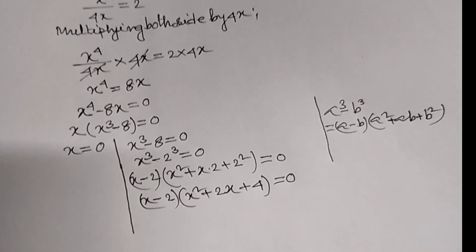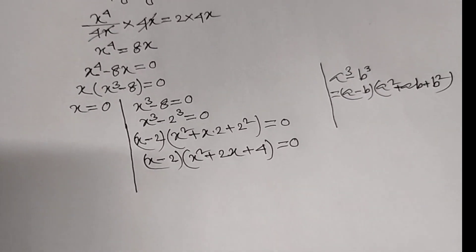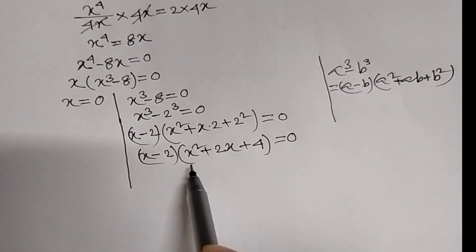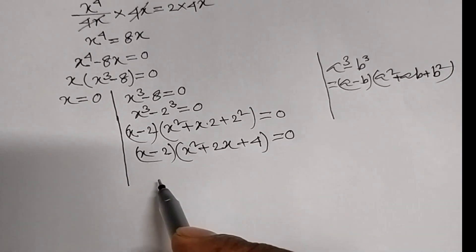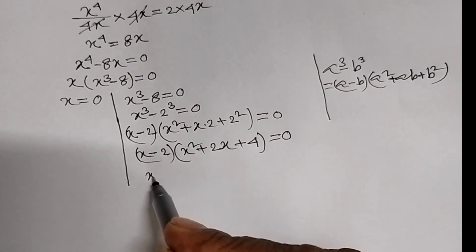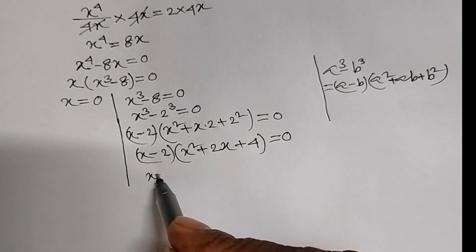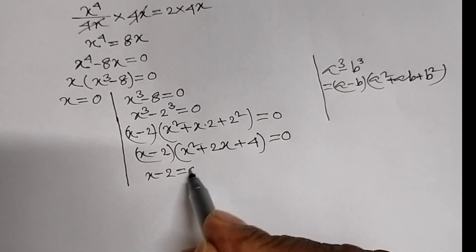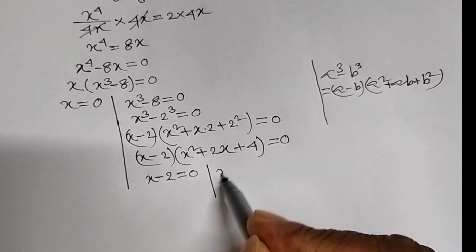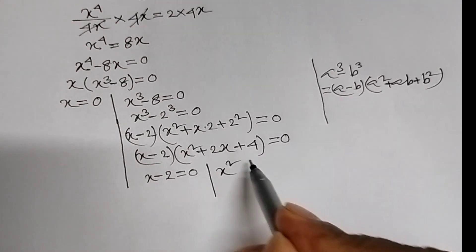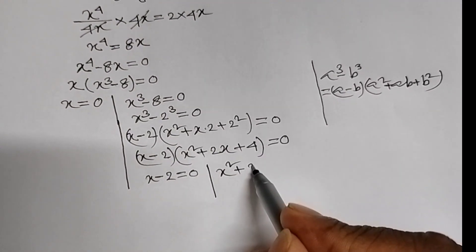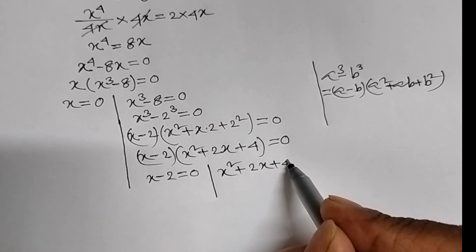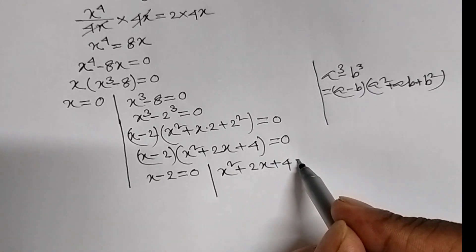Since the product of two algebraic expressions equals 0, therefore we have two equations: one is x minus 2 equal to 0, and the other equation is x square plus 2x plus 4 equal to 0.